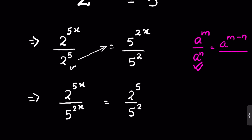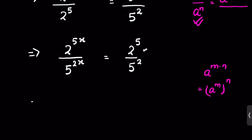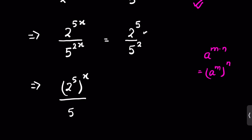Now, using the identity a raised to the power m times n equals a raised to the power m whole raised to the power n, we can write this as 2 raised to the power 5 whole raised to the power x, upon 5 raised to the power 2 whole raised to the power x. This equals 32 upon 25 raised to the power x.